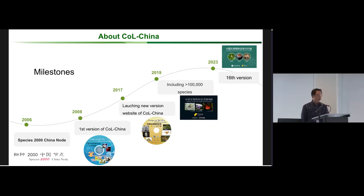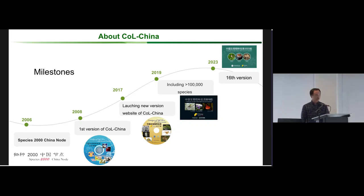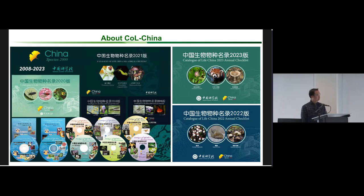These are some milestones about COL China. In 2006, the Species 2000 China node was founded. Two years later we released the first version of COL China. We launched a new version in 2017, and in 2019 COL China included over 100,000 species. Now we have reached the 16th version in 2023.